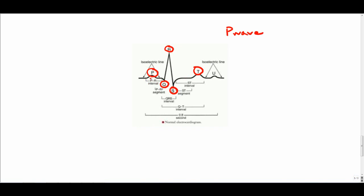As this travels down, this depolarization, it passes the AV node, goes to the ventricles, and creates the QRS complex, which consists of the Q wave, which is the first negative deflection, the R wave, the first positive deflection, and the S wave is the first negative deflection after the R wave.